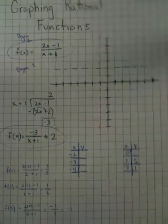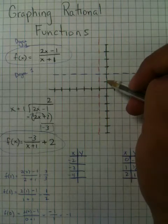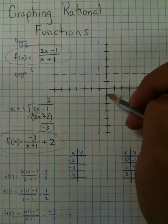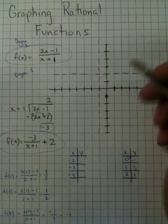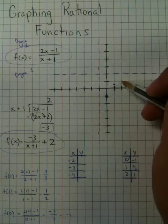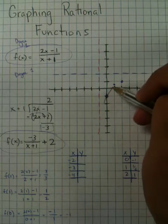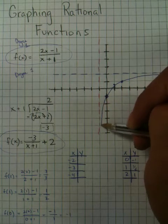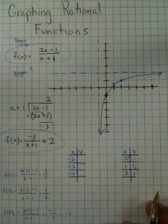So when we put these inputs and outputs in our graph, we have 0 negative 1 is right here, 1 is 1 half, and 2 is 1. And when we connect these, just like before, we get close to the asymptotes but never touch them. Close to the asymptotes, never touch them.